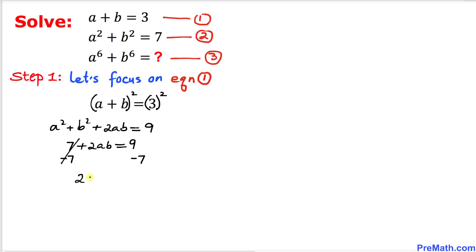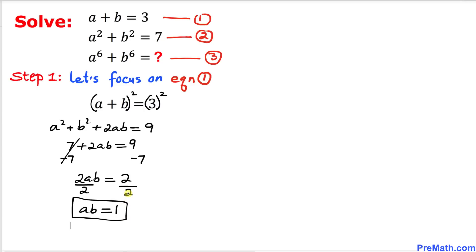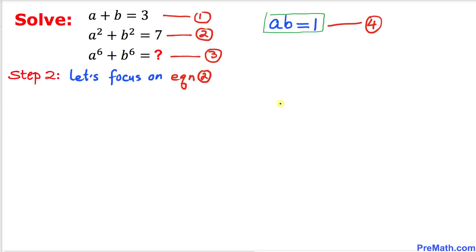Subtracting 7 from both sides, we get 2ab equals 2. Dividing both sides by 2, we find that ab equals 1. We'll call this equation four.